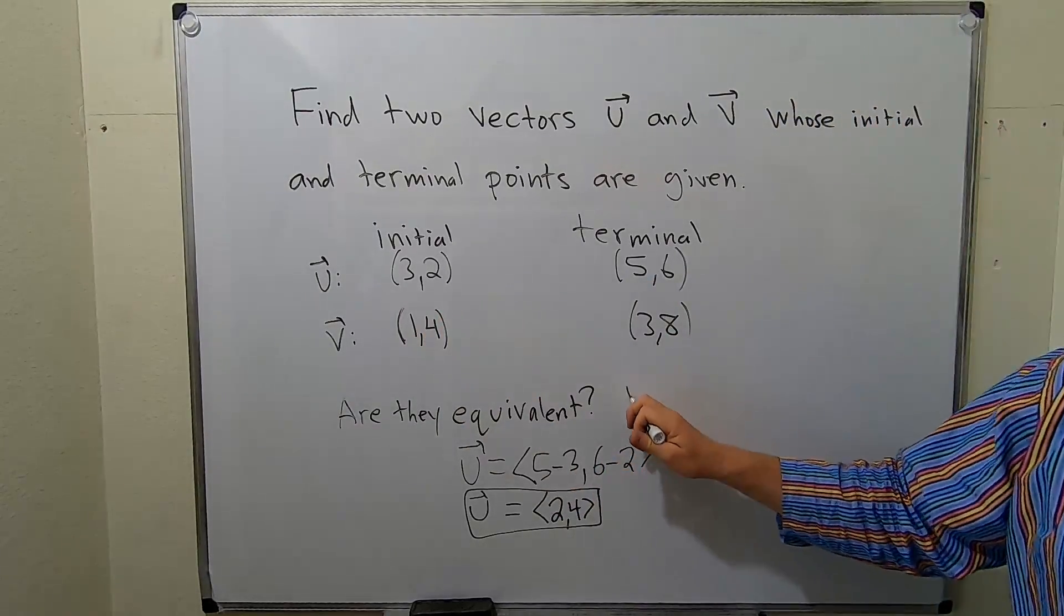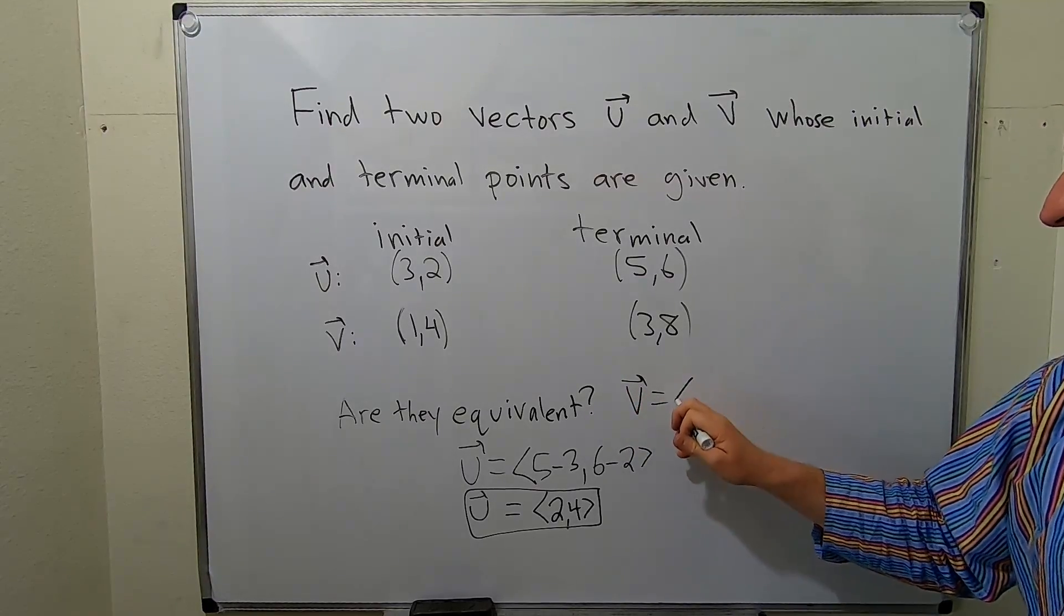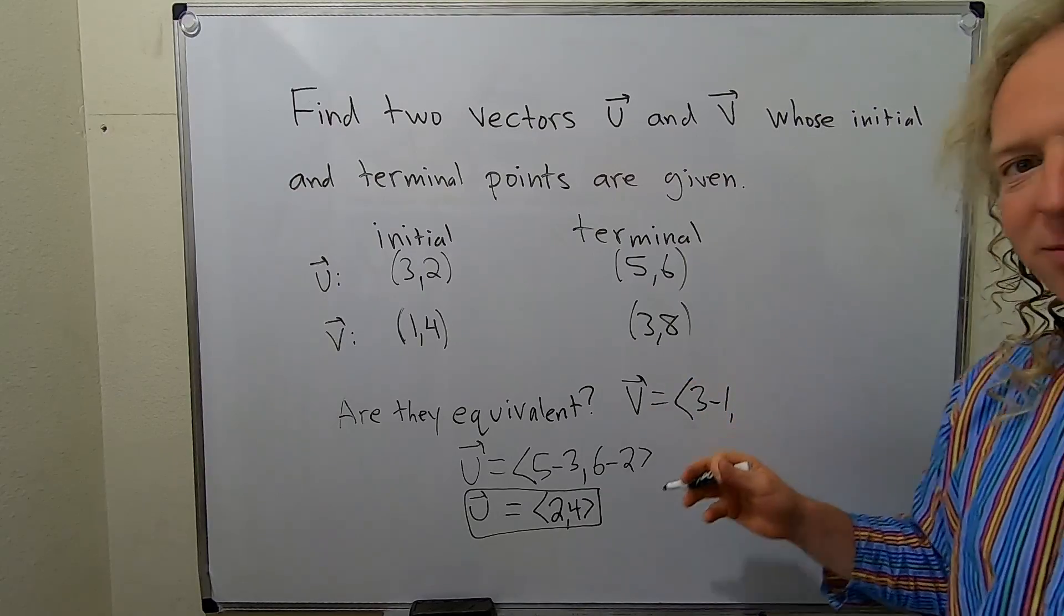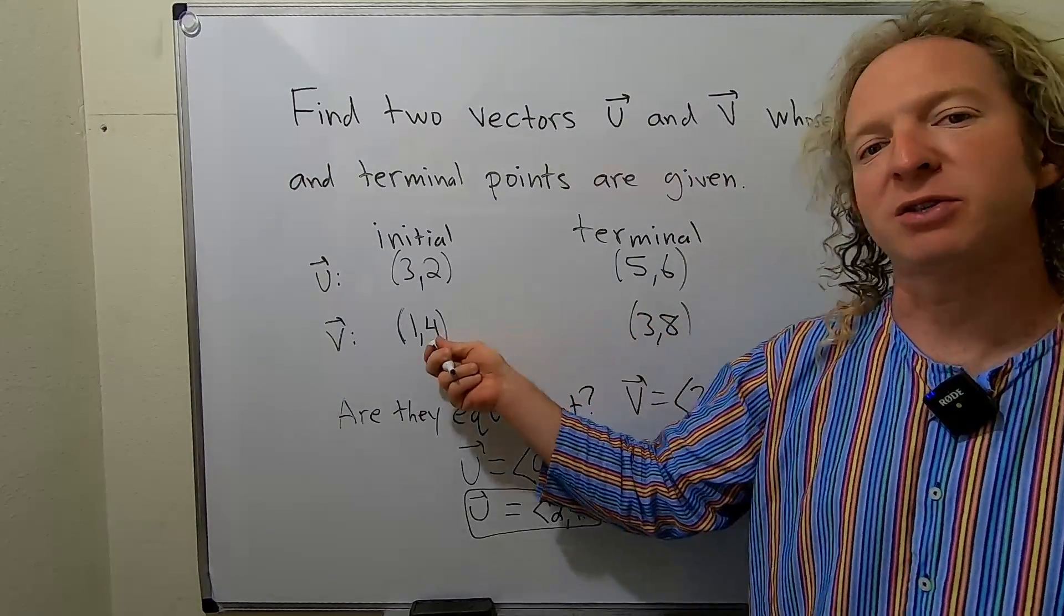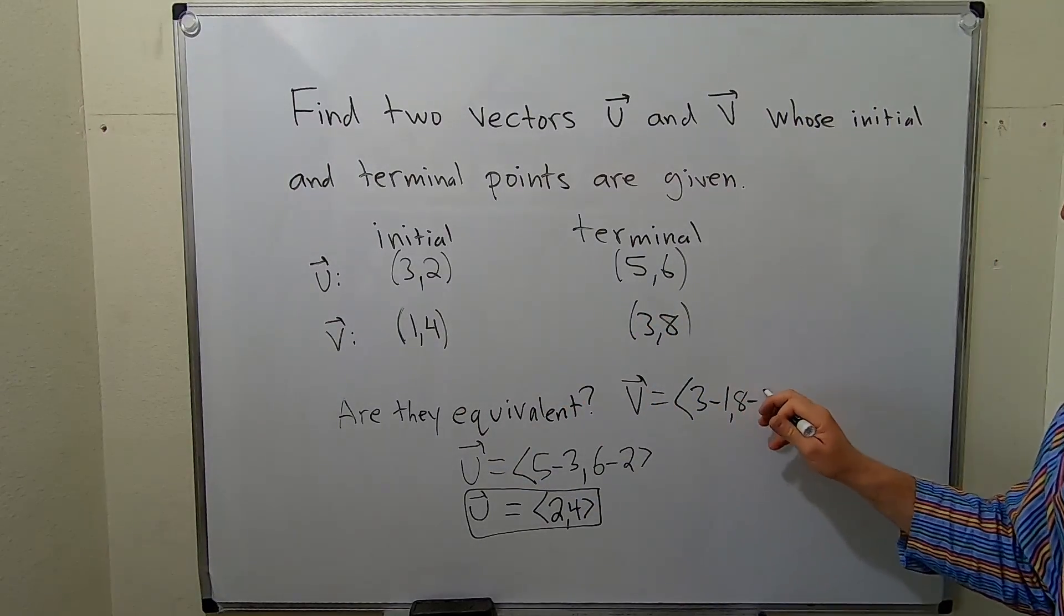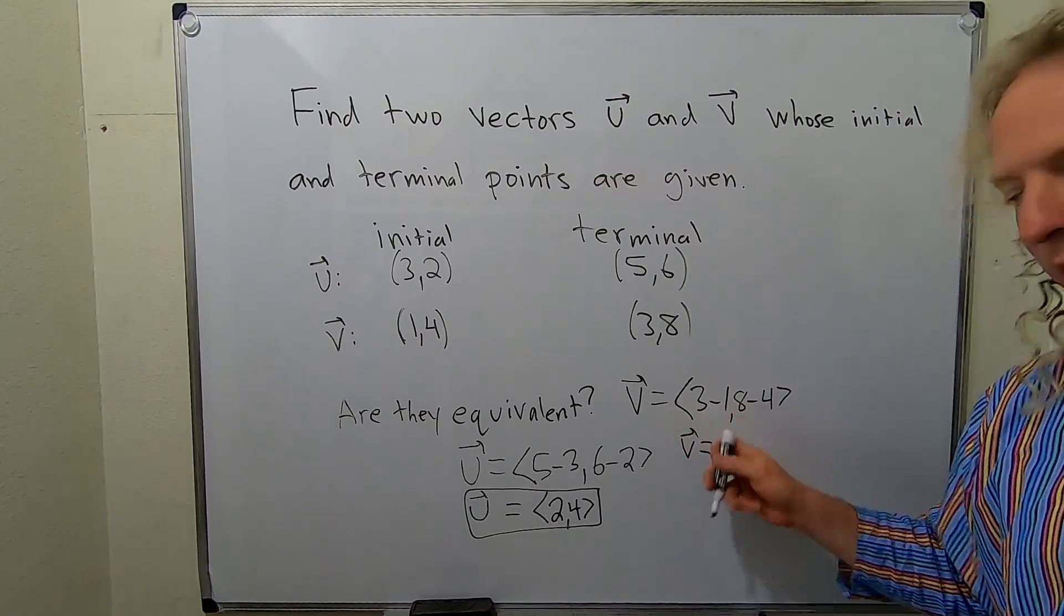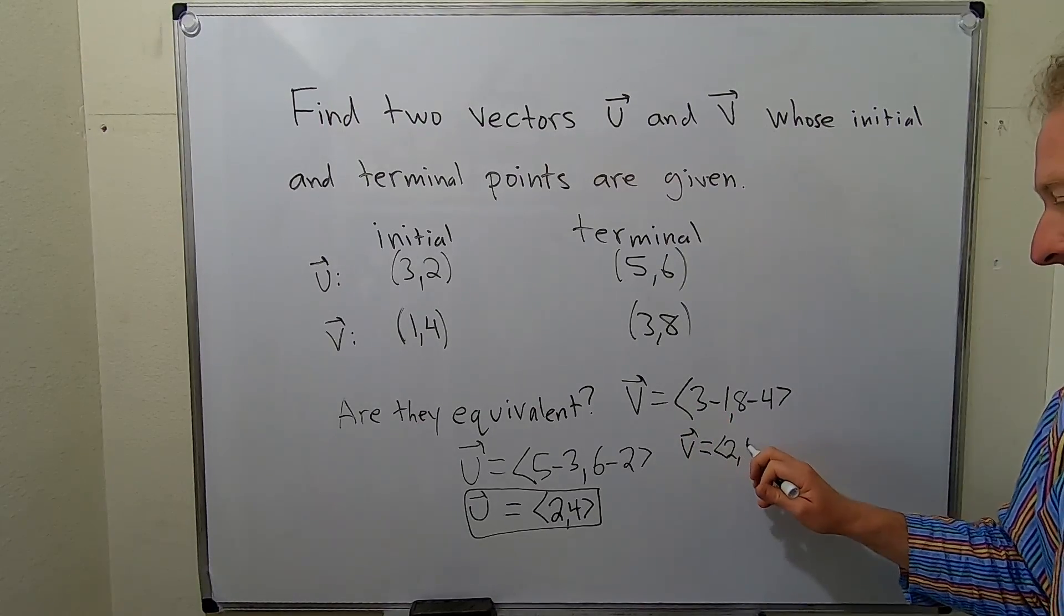So v, it'll be terminal minus initial, so 3 minus 1, so 3 minus 1, and you can skip steps. I'm just showing extra steps, and 8 minus 4. So 8 minus 4, beautiful stuff. So v is going to be equal to 3 minus 1 is 2, and 8 minus 4 is 4.